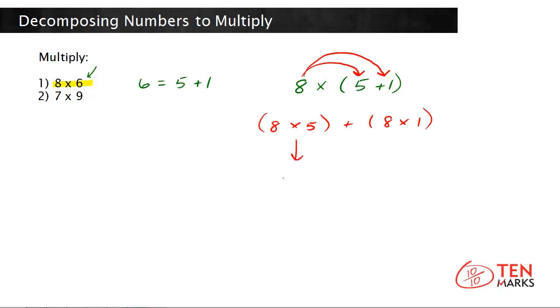Now remember from the first part of this problem we solved 8 times 5 is 40. 8 times 1 is 8. Add these two numbers together and you get 48. This is the same thing that you got when you thought of 8 times 6 as the repeated addition or if you use the distributive property you can solve the problem this way.